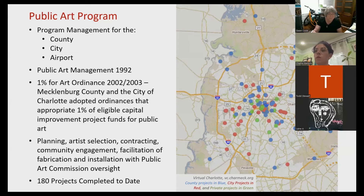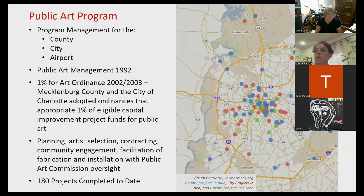A little bit about the ASC public art program. All of this is made possible by a 1% for art ordinance adopted in 2002 and 2003 — two separate ordinances, one for Mecklenburg County and one for the city of Charlotte. That percent for art ordinance means 1% of eligible capital improvement project funds are designated to public art for that specific project or within the geographic area. ASC tries to keep it as closely tied to the project that the funds are coming from as possible.